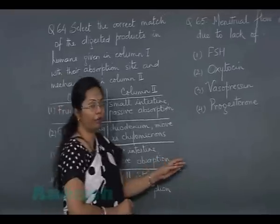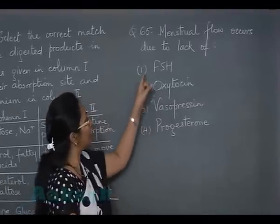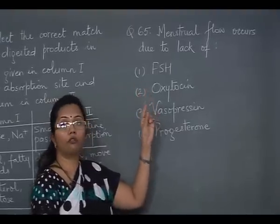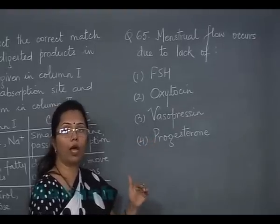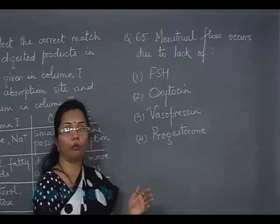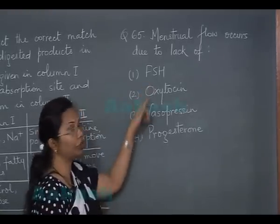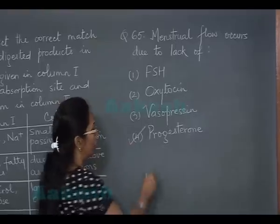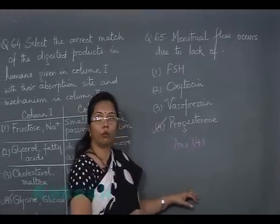Question number 65: menstrual flow occurs due to the lack of which hormone? The options are FSH, oxytocin, vasopressin, and progesterone. Menstrual flow occurs when the endometrium sloughs off. The endometrium is maintained by progesterone, and as soon as the corpus luteum regresses and progesterone levels decline, the endometrium can no longer be maintained and begins sloughing off, leading to menstrual bleeding. The answer is progesterone — option four.